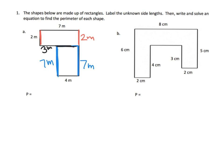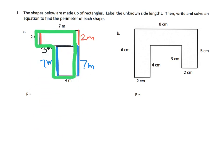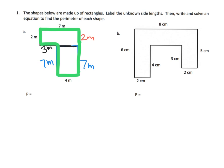We now have our entire distance all the way around the figure. In green, we know it's: 2 + 7 + 2 + 7 + 4 + 7 + 3. That gives us our entire perimeter, and we can add those together. I'll leave the addition up to parents, teachers, and students — you've got the hang of that.